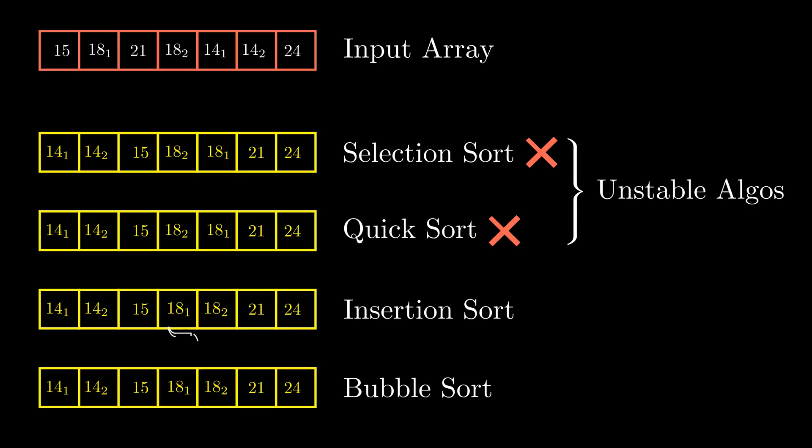Insertion sort has kept the order of the two 18s and the two 14s intact. In fact, it retains the order of the equal elements for any given input, so it is a stable sorting algorithm. Same holds true for bubble sort as well.